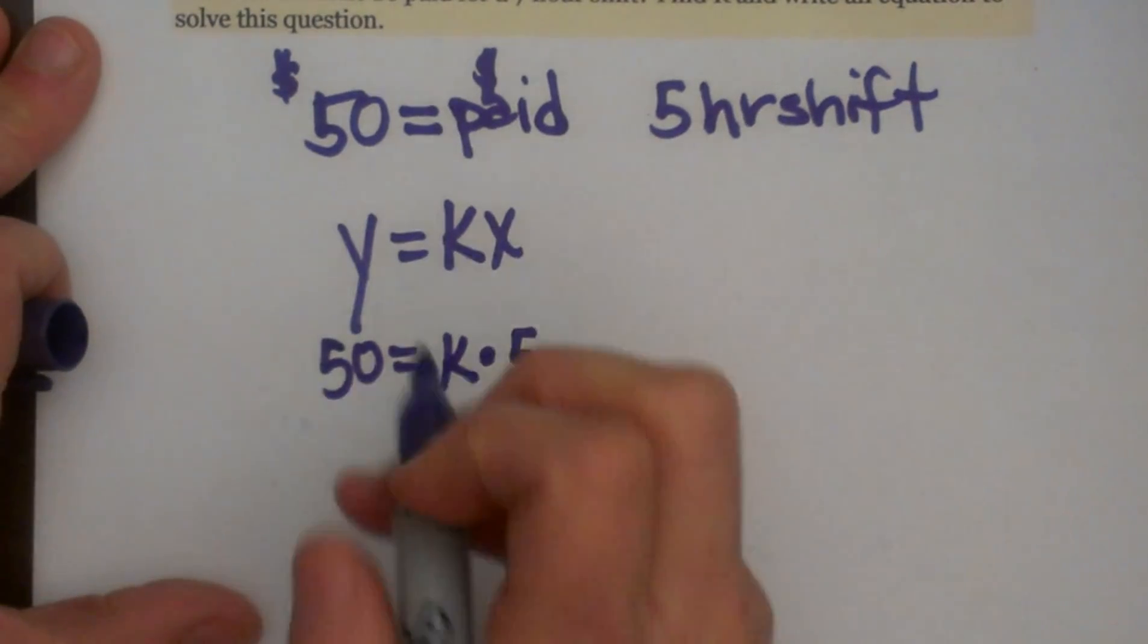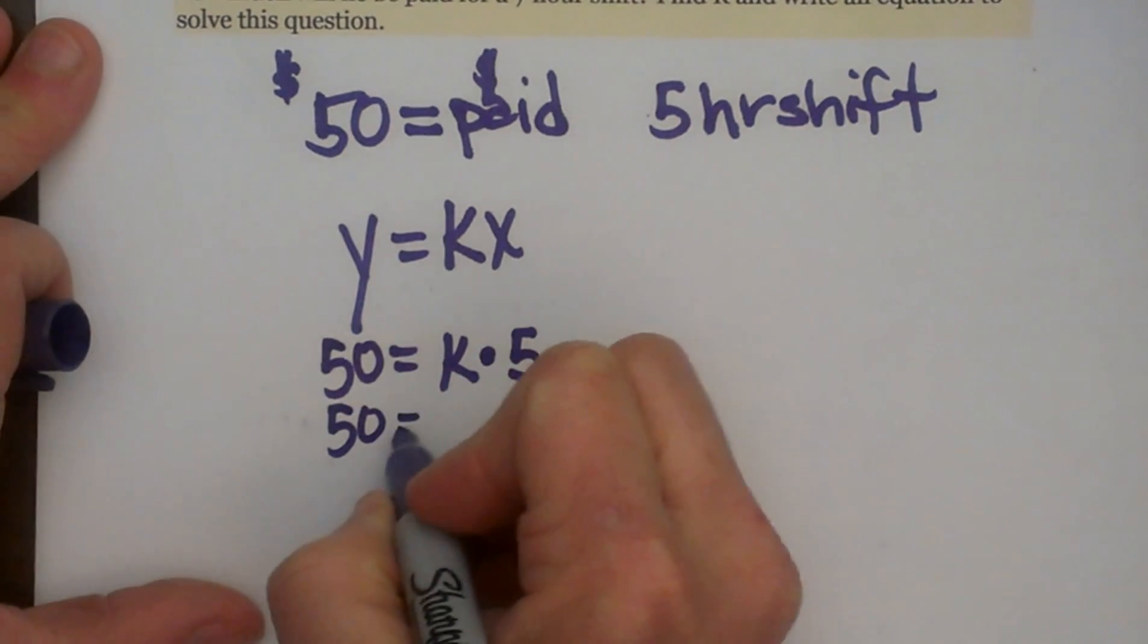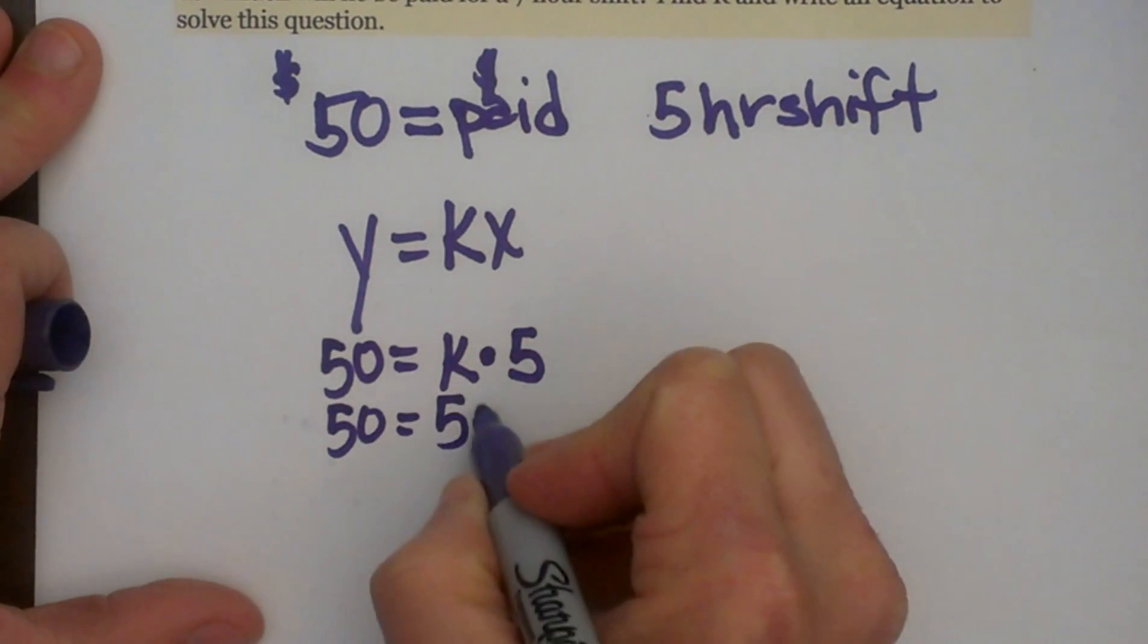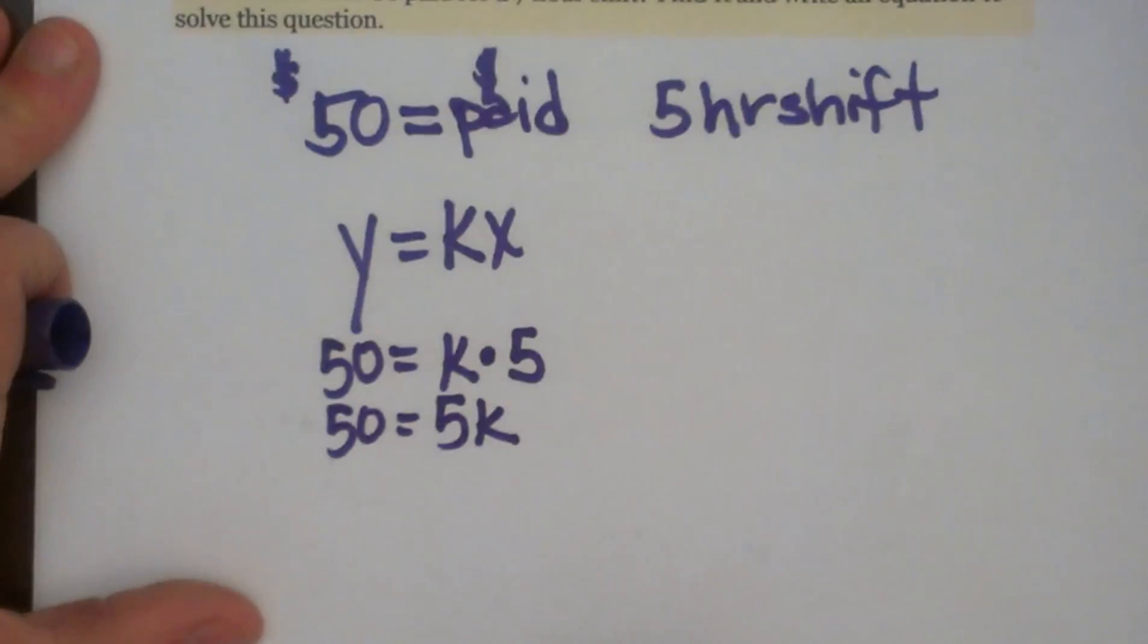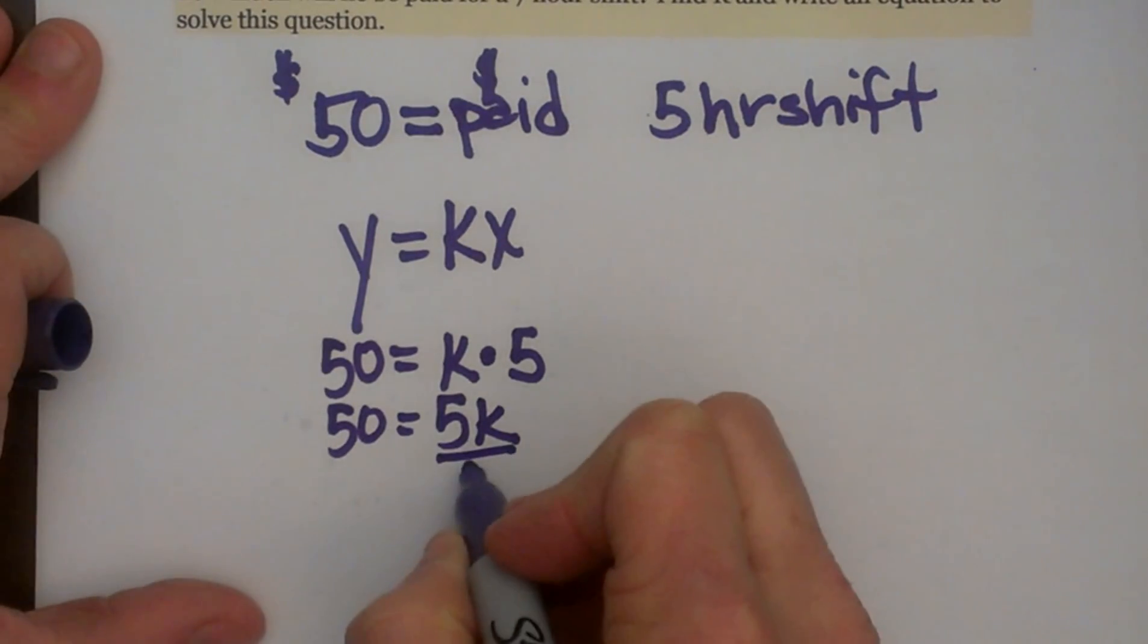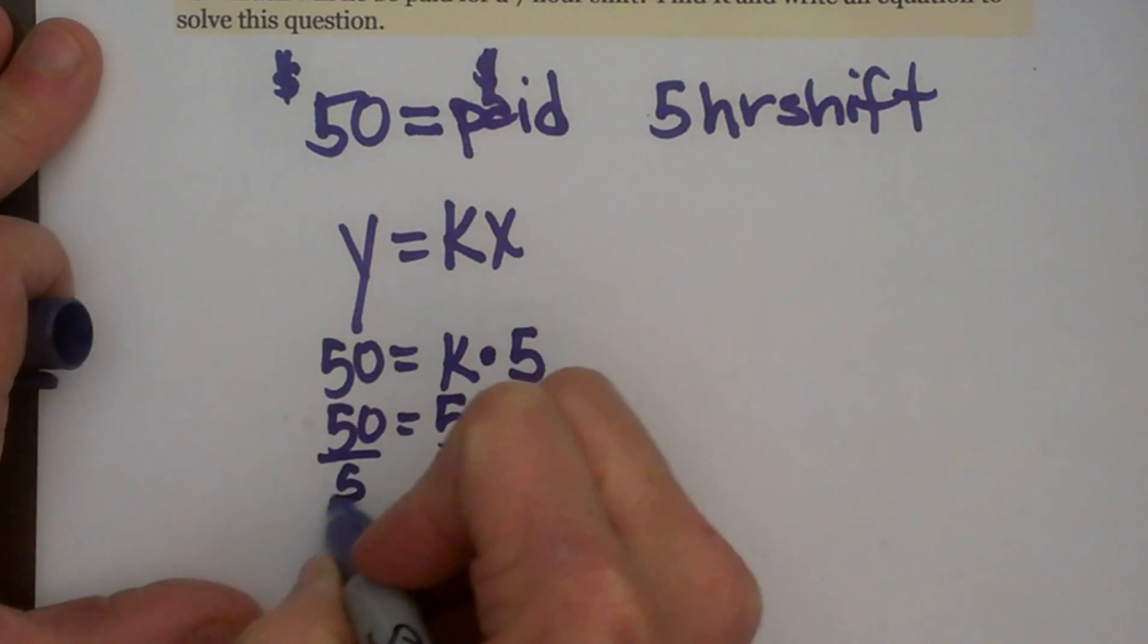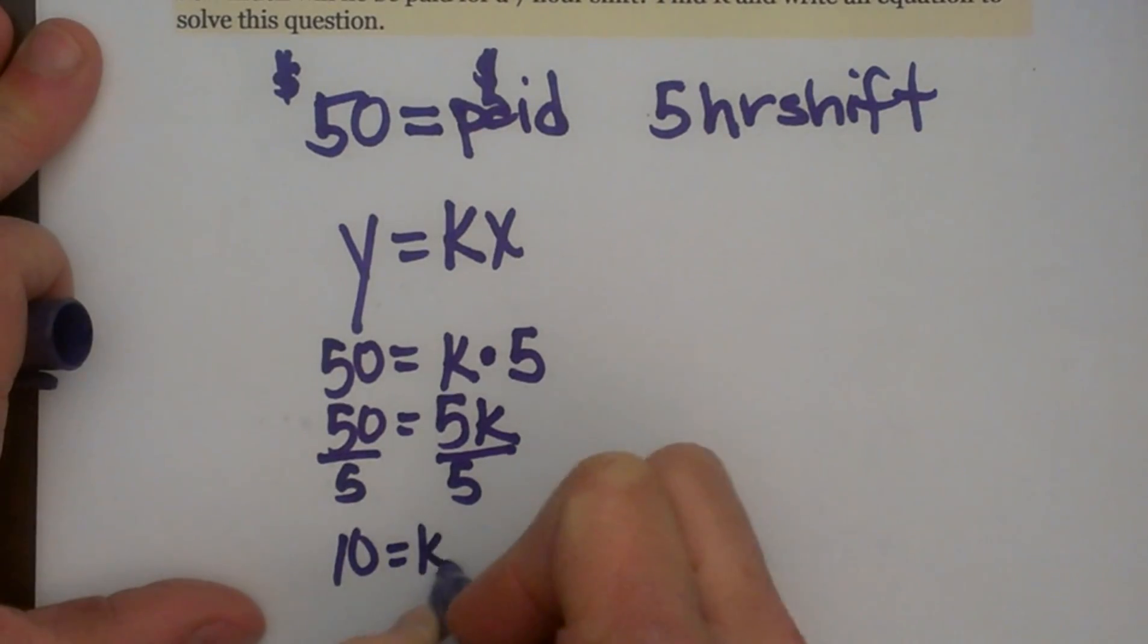Now let's solve for K. So we have 50 equals, and we typically put our variable behind our coefficient, so 5K, and then let's divide both sides by 5, so 10 is equal to K. So K is 10.